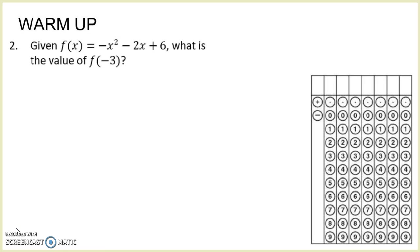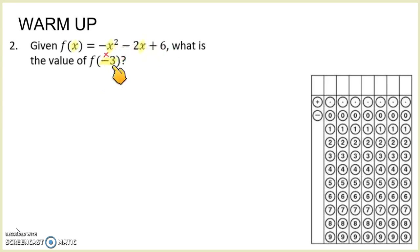Question number 2 says: given f of x equals negative x squared minus 2x plus 6, what is the value of f of negative 3? Hopefully you remember that the number inside the parentheses is my x value. So this negative 3 represents each x in the function. You can do this one of two ways — type the entire function in your calculator and find the value that way, or plug the number in and evaluate.